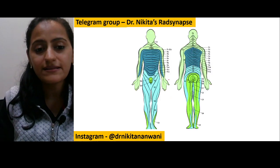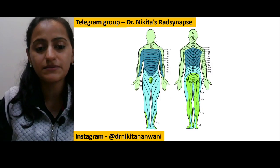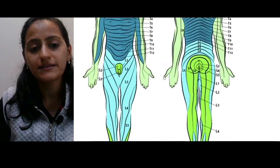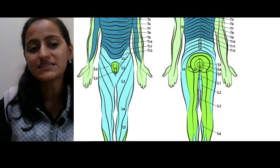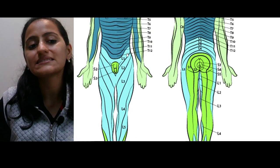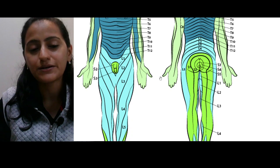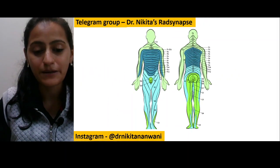Look at this image — you can see the inguinal ligament or the groin region marked here. This is L1.